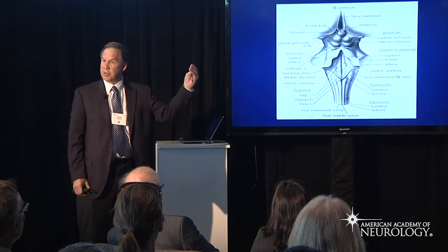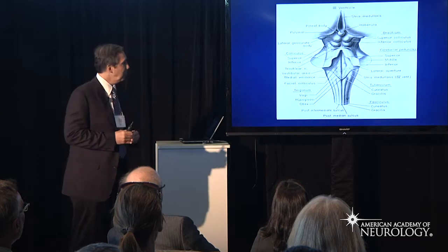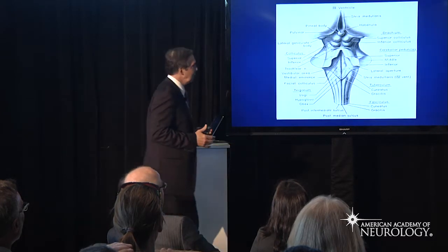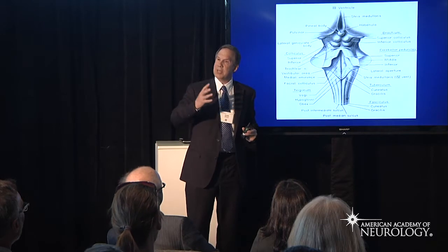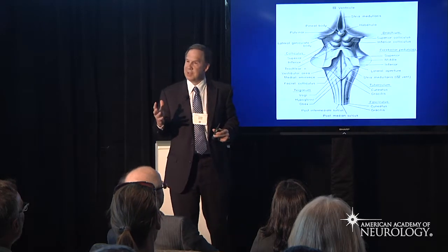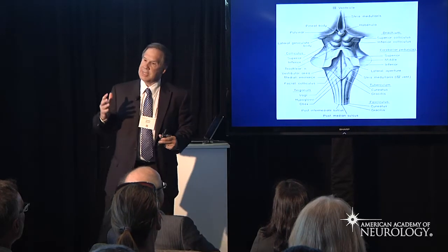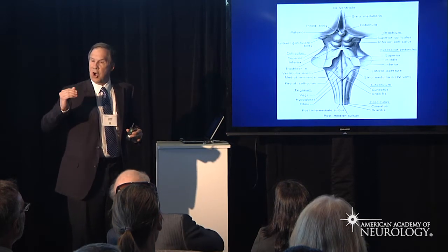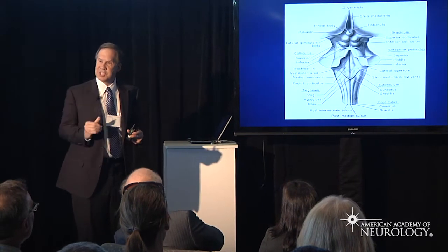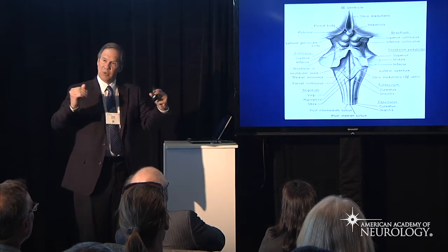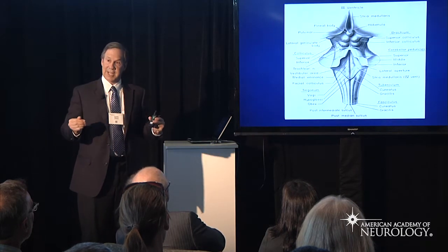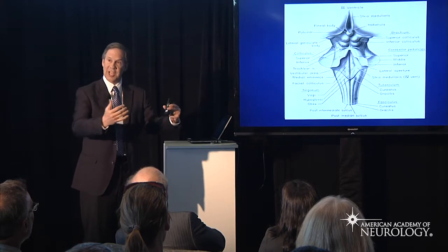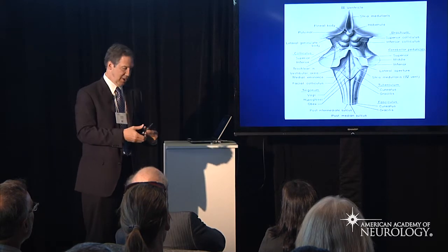This is the posterior or dorsal view of the brainstem — the back. At the back of the brainstem, we have a lumpy, bumpy appearance. The reason is that many of the cranial nerve nuclei or their fascicles are protruding at the back of the brainstem. So many of the cranial nerve nuclei are sitting in the back of the brainstem.